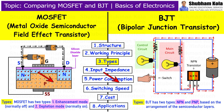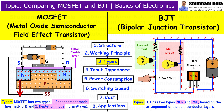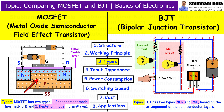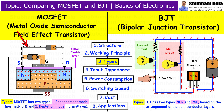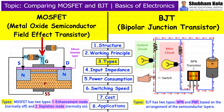Next is Types. Both MOSFET and BJT come in different variations. MOSFET is available in two main types: Enhancement mode and Depletion mode. In Enhancement mode, the transistor is normally off and current can only flow when a voltage is applied to the gate. In Depletion mode, the transistor is normally on and current flows unless a voltage is applied to stop it.